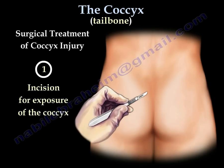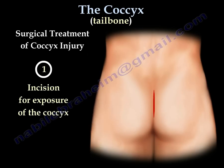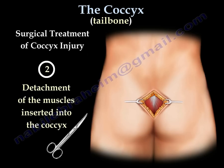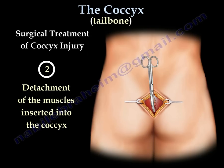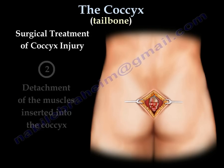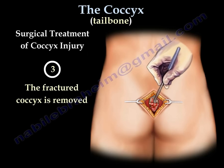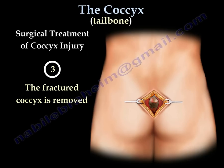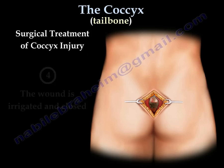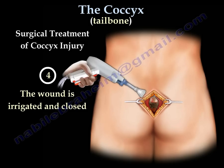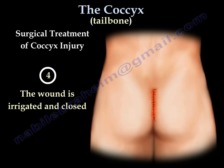Surgery includes an incision at the end of the spine to expose the coccyx, followed by detachment of the muscles inserted into the coccyx. The fractured coccyx is removed, with care taken to avoid injury to the rectum. The wound is irrigated and closed, and the patient is given antibiotics for a few days.